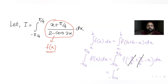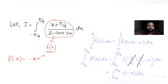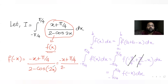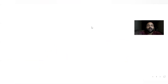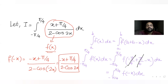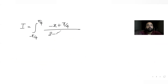So f(-x) means substituting -x in place of x. In the numerator we get (-x + π/4), and in the denominator, cos(-2x) = cos(2x), so the denominator stays (2 - cos2x). Therefore I can write I also as ∫[-π/4 to π/4] (-x + π/4)/(2 - cos2x) dx. This is equation 2, and the original is equation 1.